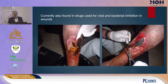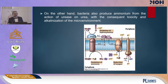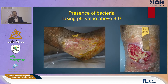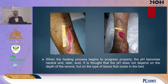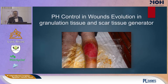The enzymes are produced by the wound itself but also by bacteria present in it. They are also currently found in drugs for viral and bacterial inhibition in wounds. Bacteria also produce ammonium from the action on urea, with consequent toxicity and alkalization of the environment. The presence of bacteria can take the pH to values above 8 or 9. Studies measuring the pH of chronic wounds have detected a range between 7.5 and 8 or 9. Wounds with more alkaline pH have lower cure rates than those with pH close to 7. When healing begins properly, pH becomes neutral and later acidic. pH depends not on the depth of the wound but on the type of tissue present in the wound bed — controlling pH drives evolution toward granulation tissue and scar tissue generation.